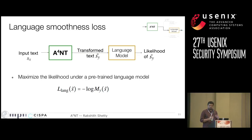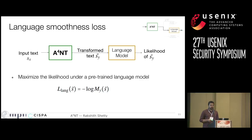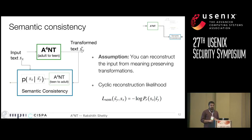The second loss function is the language smoothness loss, which encourages ANT to produce valid English language sentences. We do this by having a pre-trained language model and using its likelihood. You generate text from ANT, get the likelihood estimate from the pre-trained model, and maximize this. The interesting part is how to preserve the semantic consistency: if you make transformations that preserve meaning, you should be able to reconstruct the original sentence back.